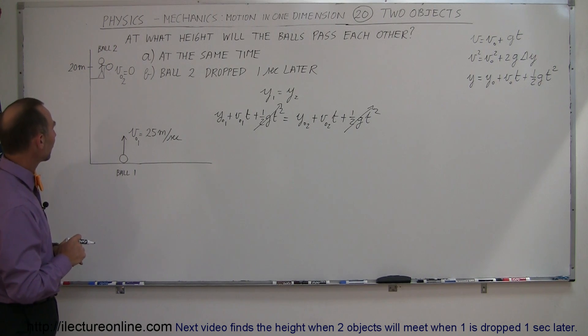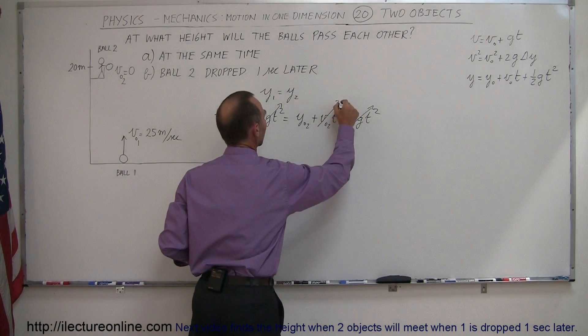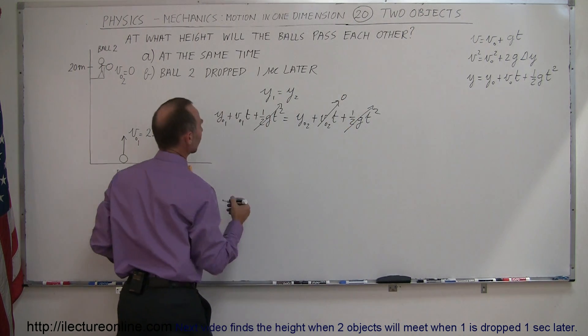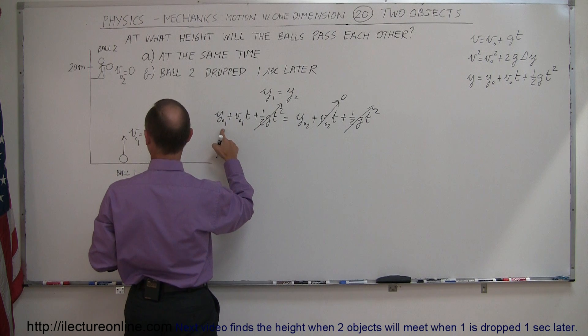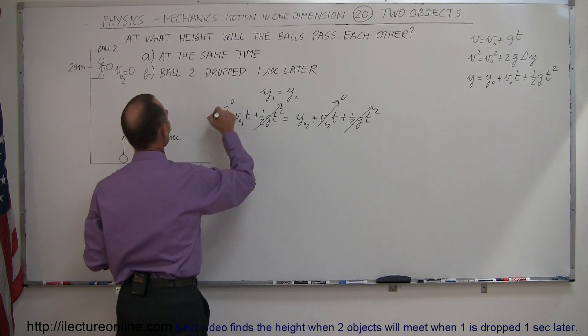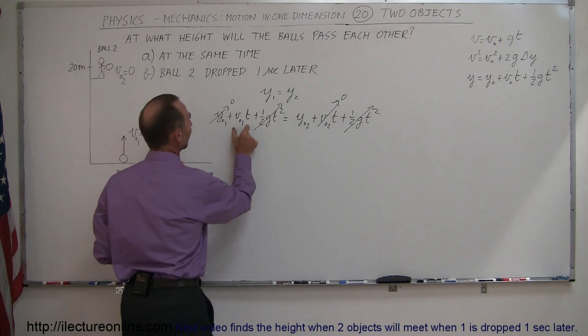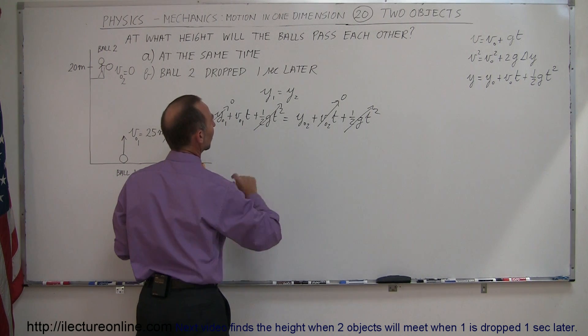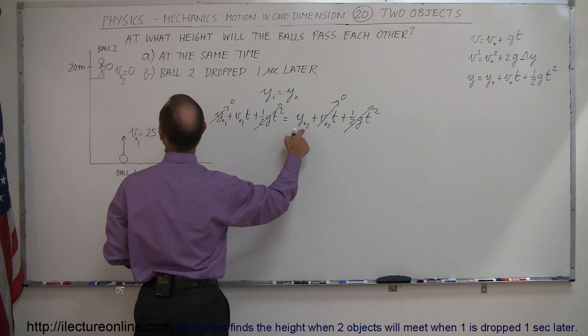In the case of v2, v initial is zero, so that also goes to zero, that cancels out. So, what we have now is y1, and y initial one, that will also be zero, because it starts on the ground. Wow, this is getting pretty easy at this point. So, now all we have left is v1t equals y02.